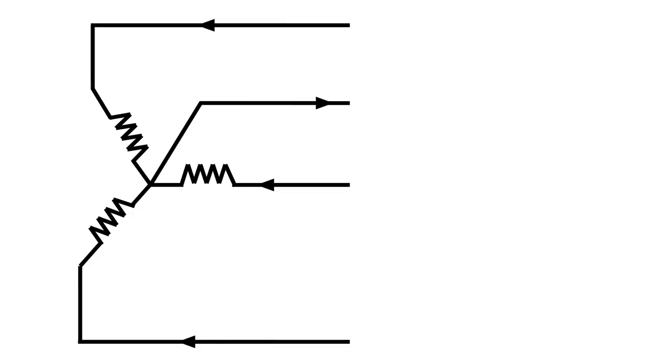Here we have our standard Y system or star system. We have a phase coming this direction, phase coming in this direction, phase coming in this direction, and we have our neutral which will be going out in that direction.